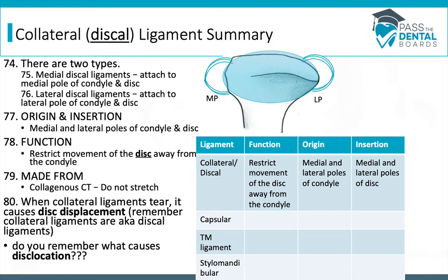Which direction is the most common for disc displacement to occur? Remember the disc is divided into three sections — posterior, intermediate zone, and anterior zone — and that anterior zone is connected to the superior fibers of the lateral pterygoid muscle. That muscle pulls the disc anteriorly. So the most common displacement direction is anterior. The discal ligaments do quite a lot to help prevent the lateral pterygoid from displacing the disc anteriorly.